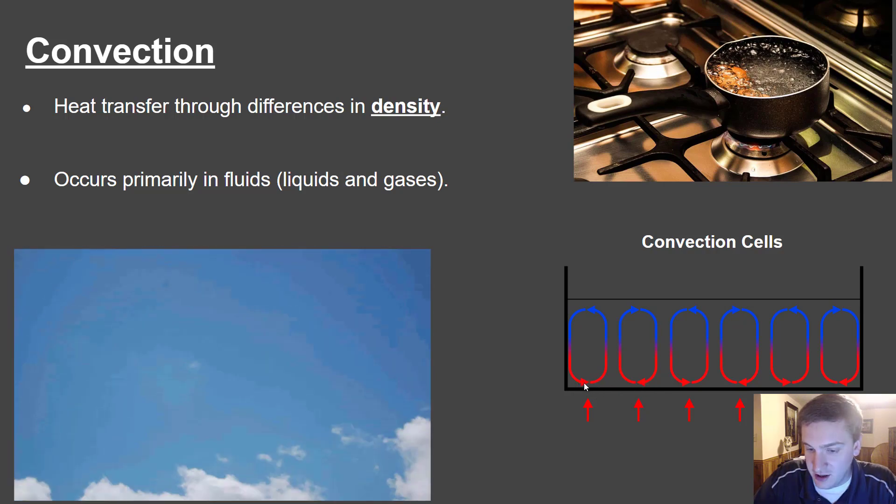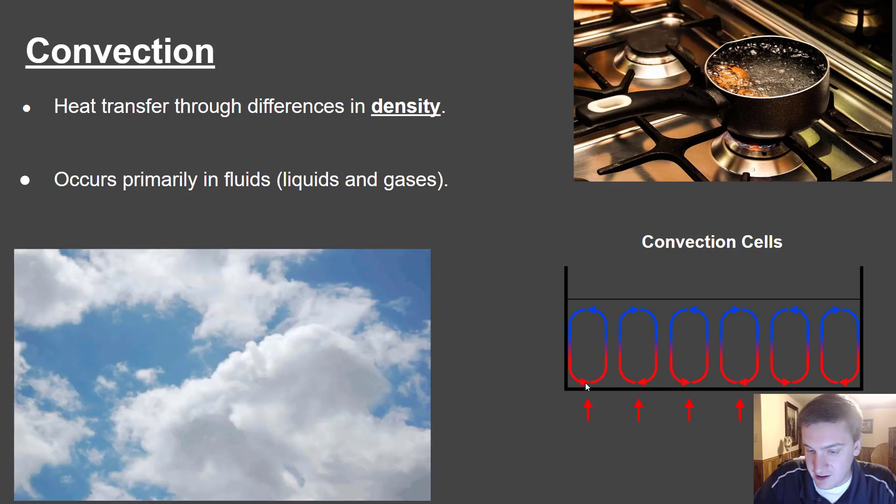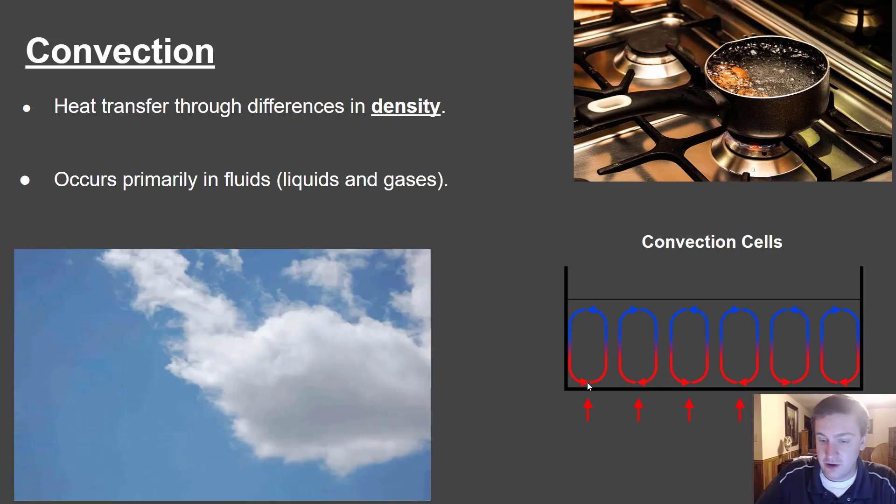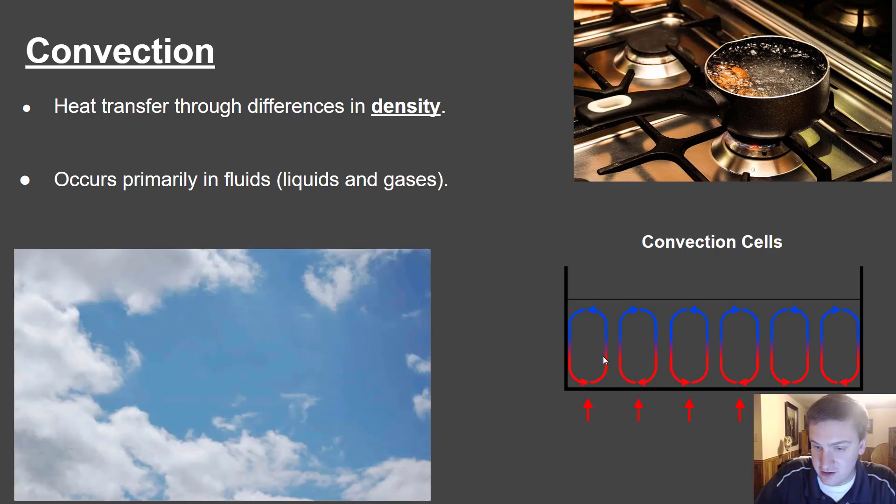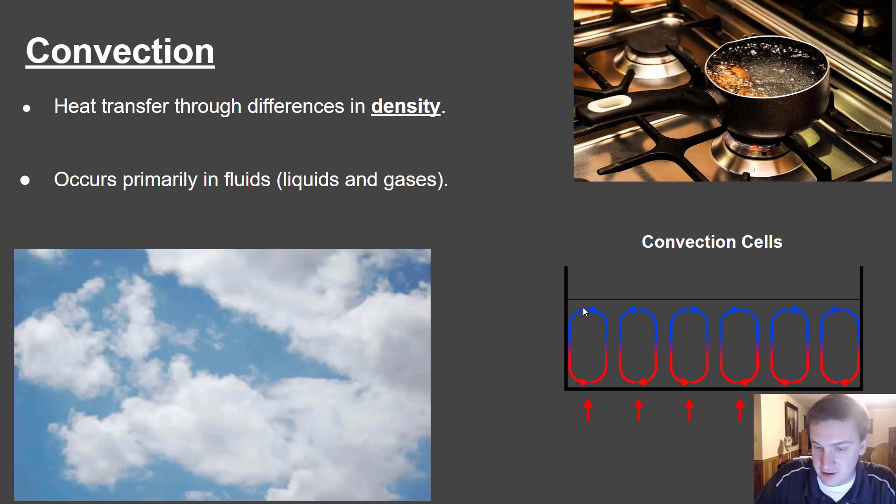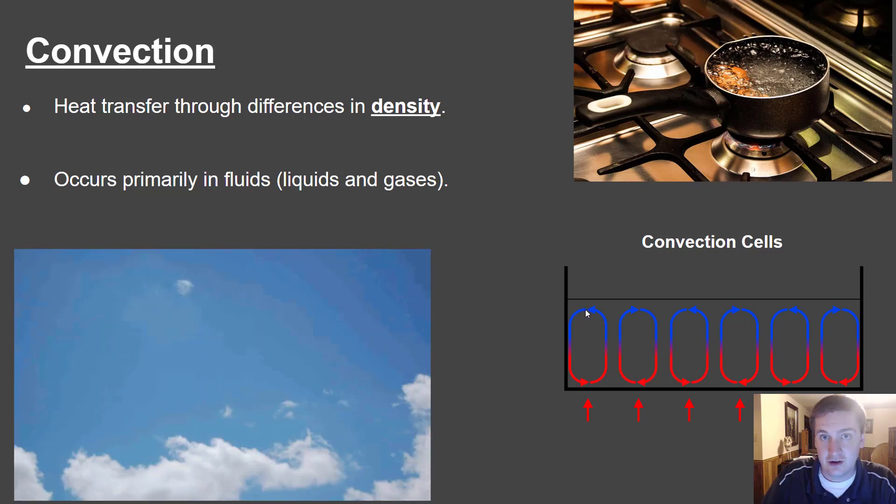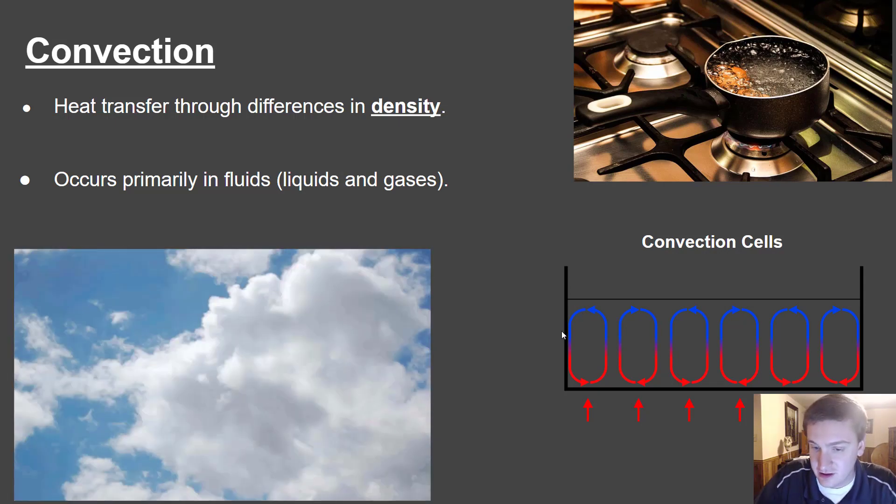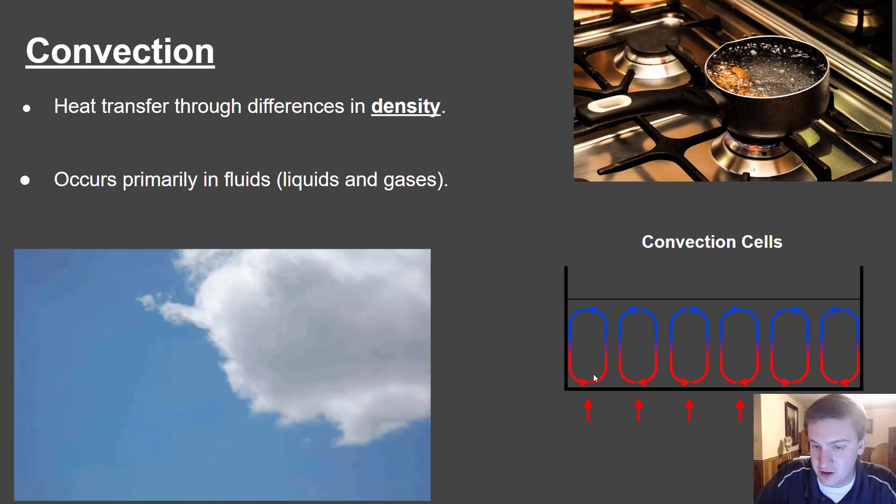And so again, in a convection cell, this is a simplistic model, but you're going to have a heat source here at the bottom, that object, whatever it is, the fluid is going to get less dense, and it's going to rise up. And as it gets to the top, it's going to become more dense. It's going to cool and become more dense and sink down to the bottom. And so you're going to have a complete cell.